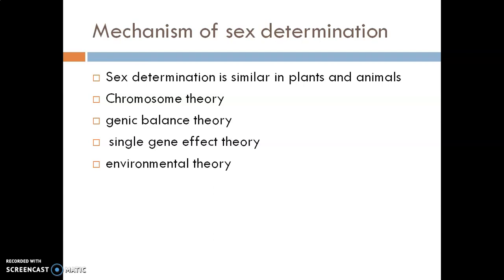In hermaphrodites, the role of genes in sex determination appears to be less significant than in unisexual organisms. Genes can regulate the timing and extent of different sexual phases in most hermaphroditic invertebrates. In fish species like bass, sex reversal can occur under hormonal and environmental influence. Domestic fowls like hens have also been seen to undergo spontaneous sex reversal under hormonal influence. In alligators and turtles, the incubation temperature determines sex.